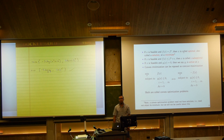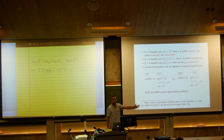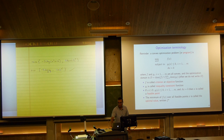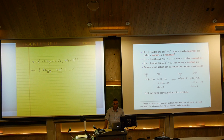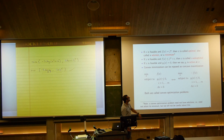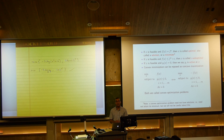If x is feasible and f(x) equals the optimal value, x is called a solution or optimizer, sometimes an optimal point — I'll usually use 'solution' and denote it x*. Note: f* is the value of the criterion at the minimum; x* is the point that achieves the minimum. If f(x) ≤ f* + ε, x is called ε-suboptimal. If gᵢ(x) = 0, constraint i is active at x; if gᵢ(x) < 0, it's inactive.